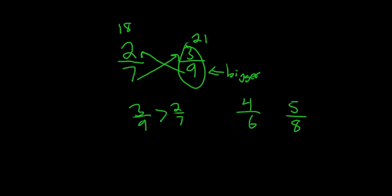So all you do here is you multiply. So you do 6 times 5, that gives you 30. 8 times 4, that gives you 32. So this number, 4 over 6, is bigger than 5 eighths.